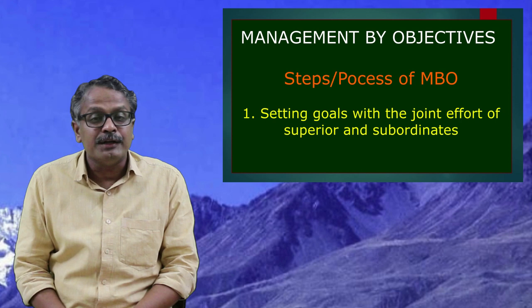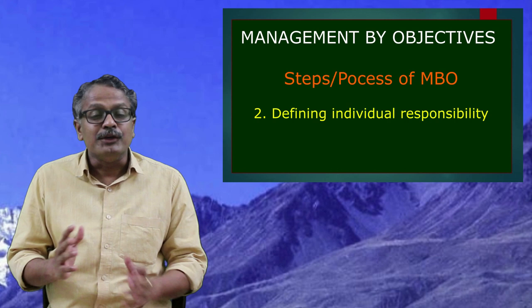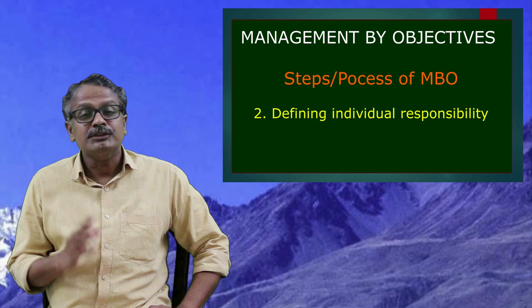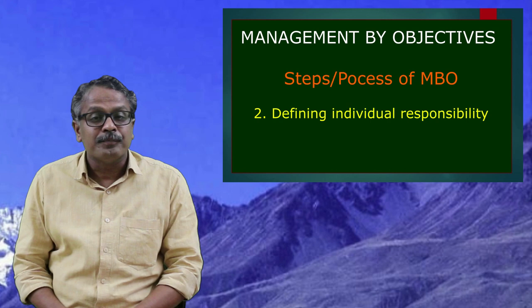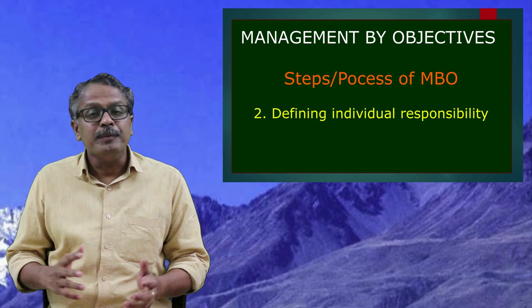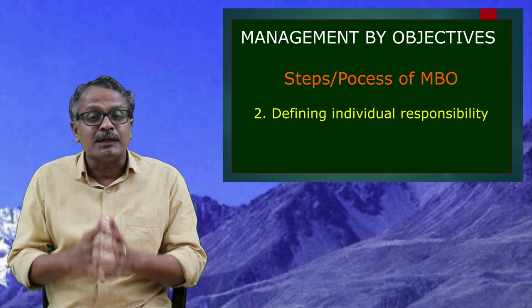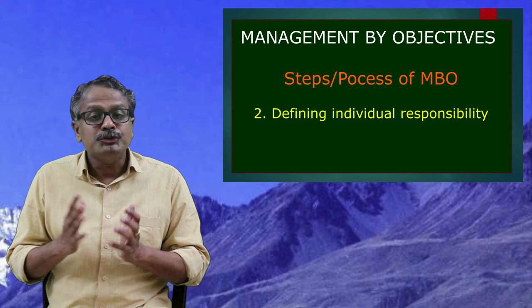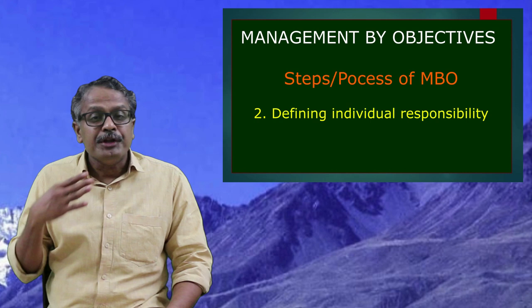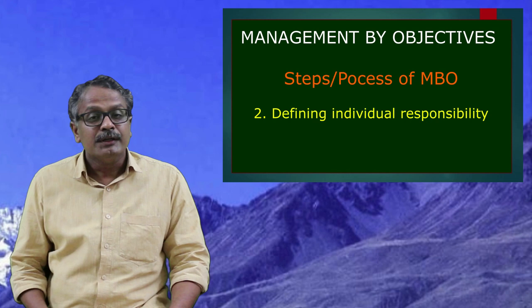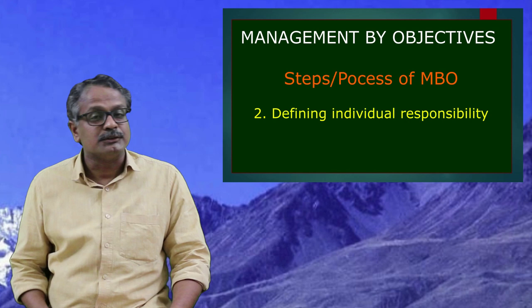The second step is defining individual responsibility. This is the stage where the duties and responsibilities of each person in the organization are determined. Once common goals are set, they are split into individual goals — each person must perform their part of duty towards the attainment of the common goal. Individual targets are determined, giving everyone a clear idea of their role and responsibility. When everybody performs their part, it leads to attainment of organizational goals through division of work and responsibility.